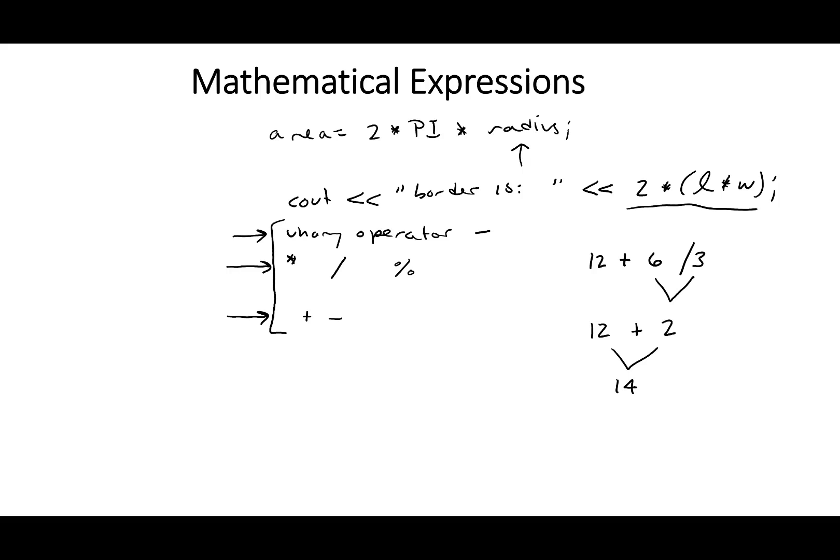The other thing is, so this unary operator, if we look at our equation, the unary operator has a right-to-left associativity, so the order of associativity. So this is right-to-left. And then these other two, the multiply, divide, modulus, and plus and minus, these both have left-to-right associativity.